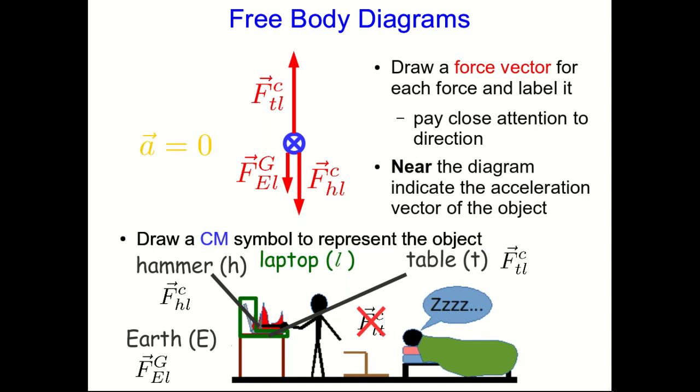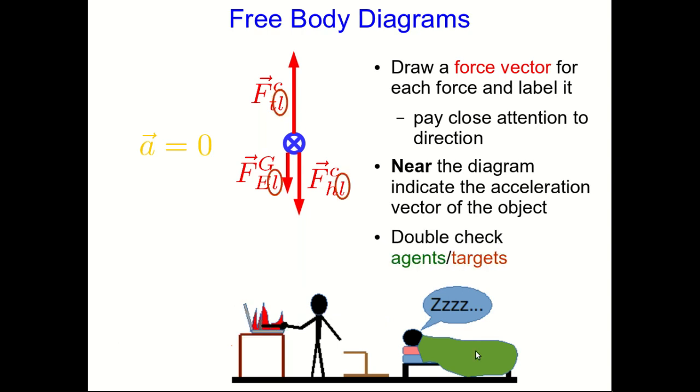And finally, somewhere near the diagram, indicate the direction that you think the object is accelerating. Or, if it's not accelerating, then say its acceleration is zero.